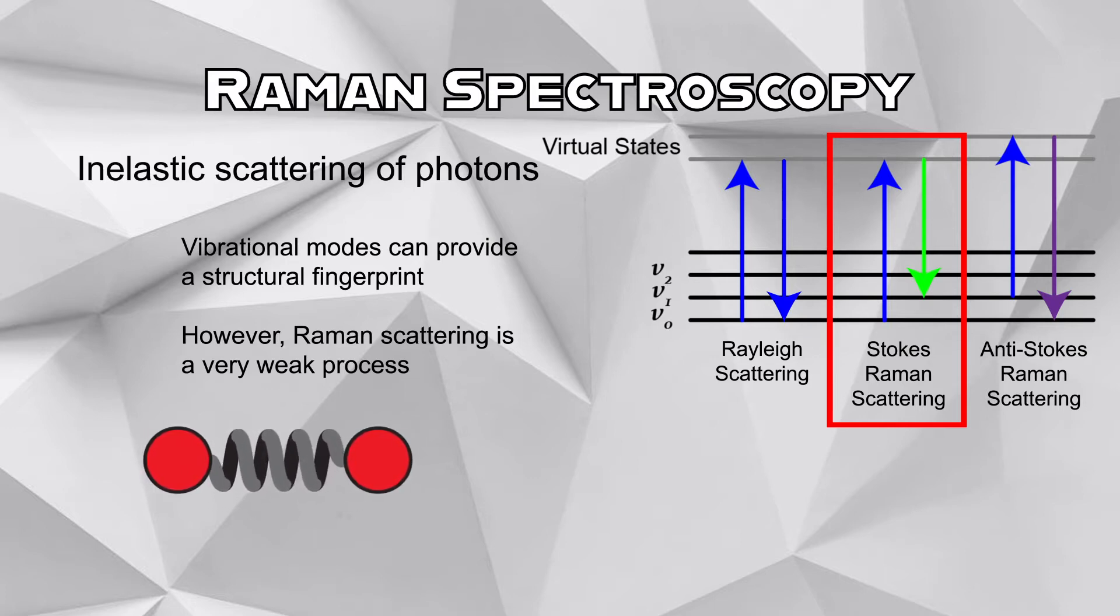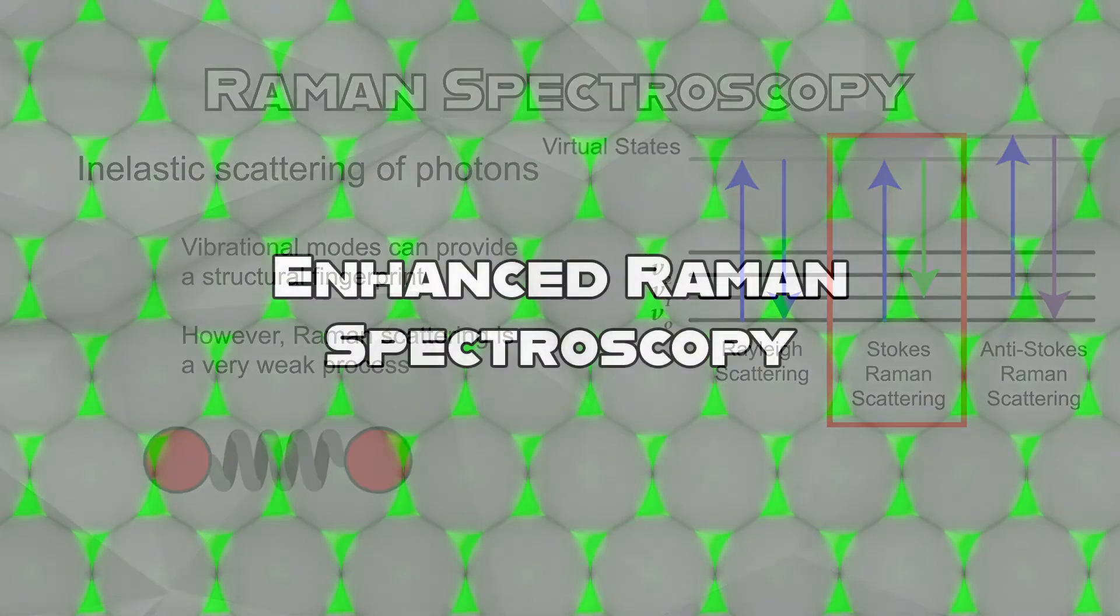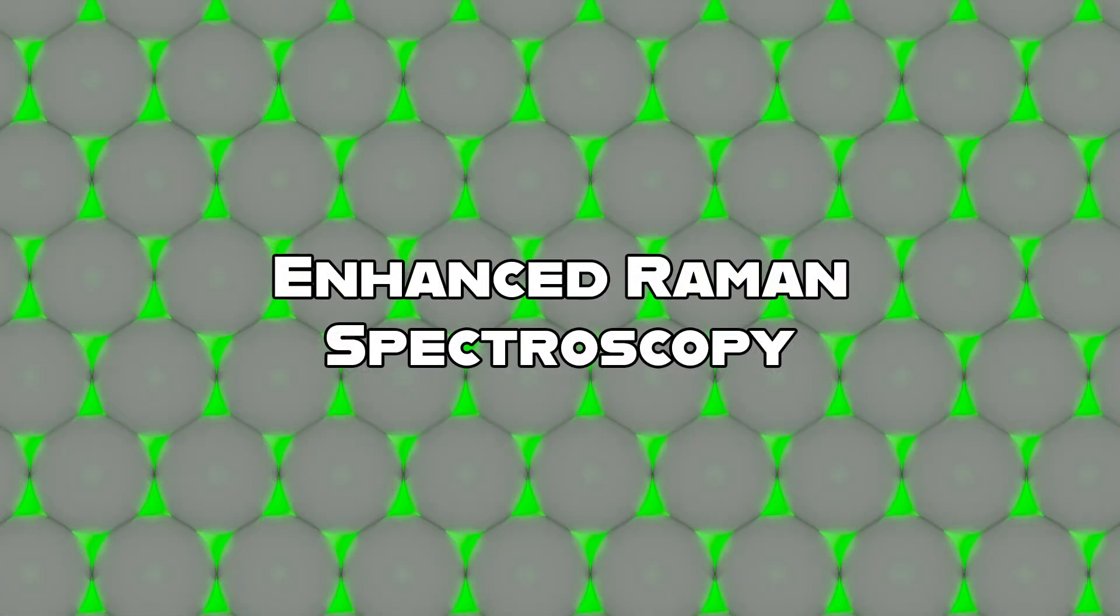However, Raman scattering is a very weak process. Only about 1 in 10 million incident photons are scattered inelastically. In order to obtain a Raman spectrum of a molecular monolayer, it becomes necessary to use enhanced Raman spectroscopy.